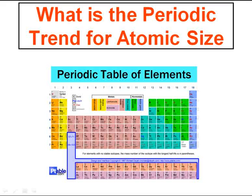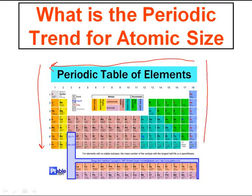I just want you to be able to take a periodic table and draw the trends for atomic size. My atomic size gets bigger going from the right side to the left side in any period, and it gets larger as I go down as well. So as I go down my periodic table, the atomic size always gets bigger, and as I go from right to left, my atomic size will get bigger as well. That's all, guys — hope it was helpful. Enjoy.